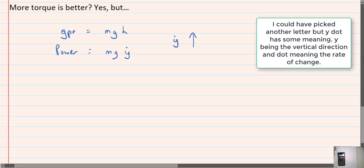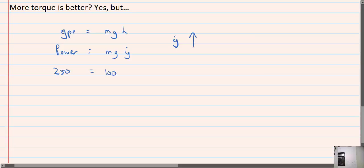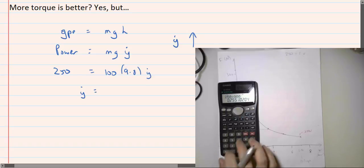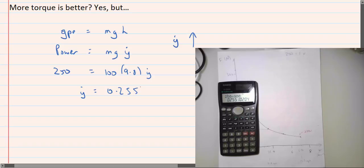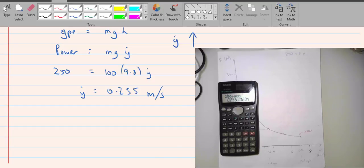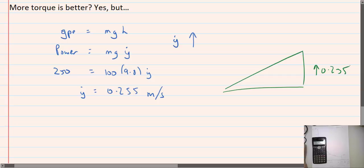So Y dot is how fast I'm going, vertically upwards. So 250 watts is mass 100, 9.8 times Y dot. So we can solve that. So 250 divided by 980 is 0.255 meters per second. So my vertical speed is 0.255. Let's draw that on a diagram. 0.255 here.